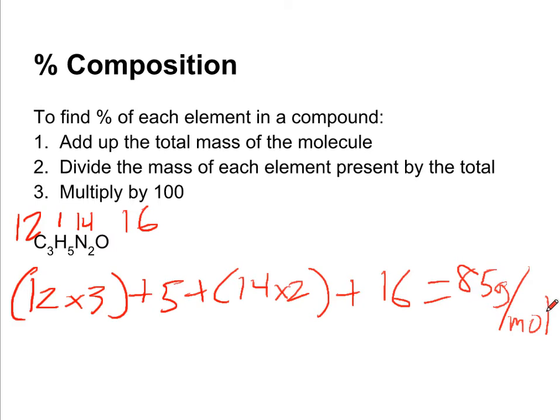Now to find the percent for each element, we're going to divide the mass of each element that's present by 85. So for carbon, 12 times 3 is 36. We're going to divide 36 by 85, and multiply it by 100. That's going to give us 42.4% carbon.